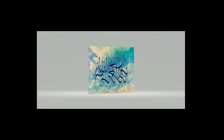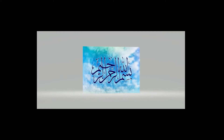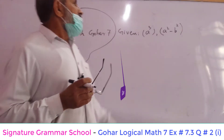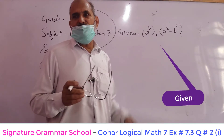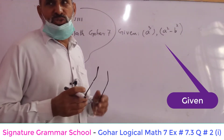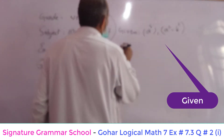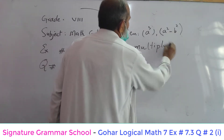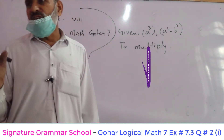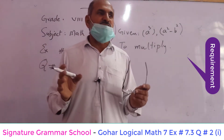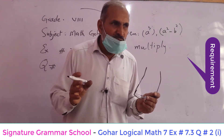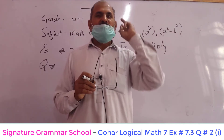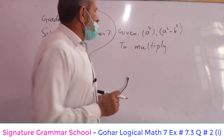We have been given a cube, and the second value is a square minus b square. The requirement is to multiply these two values. We solve the question in three steps: step one, step two, and step three, coming toward the solution.